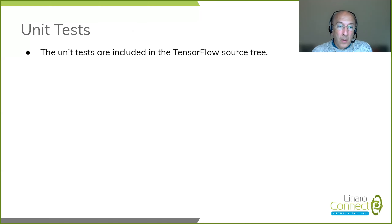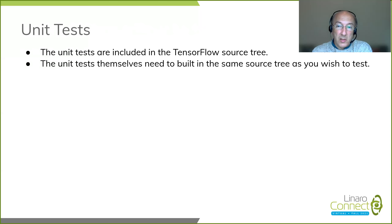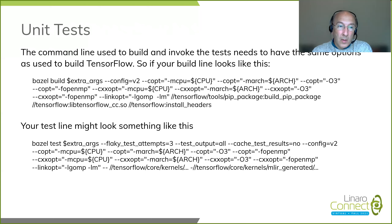The unit tests are included in the TensorFlow source tree, so they are already there and waiting to be used. The unit tests themselves need to be built in the same source tree as the one you wish to test. This ensures that the unit tests are run on the same code you are going to package, and used in the same CPU architecture. The command line used to build and invoke the unit tests needs to have the same options as used to build TensorFlow — for example, config equals v2, copt mCPU, mArch, and so on. These options also need to be present in your test line, with test-specific options added at the beginning and different targets at the end.